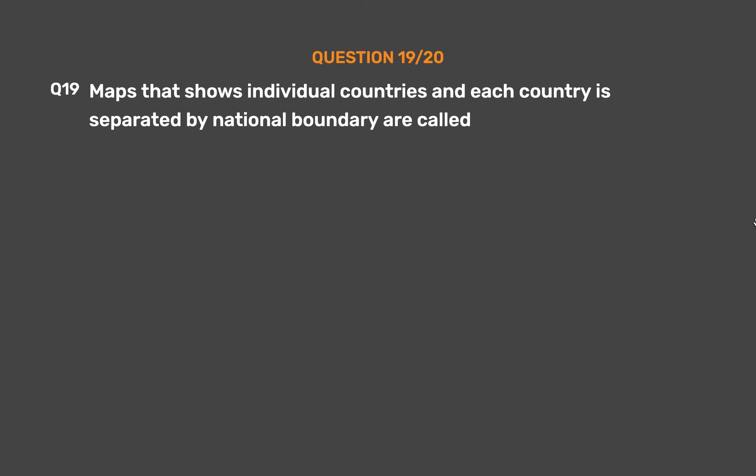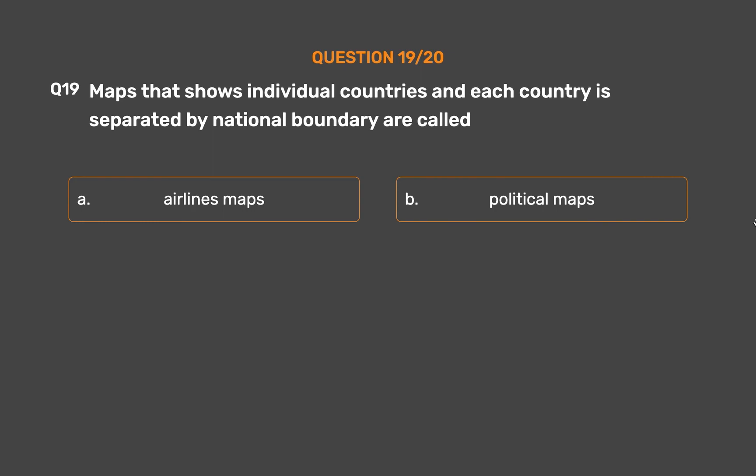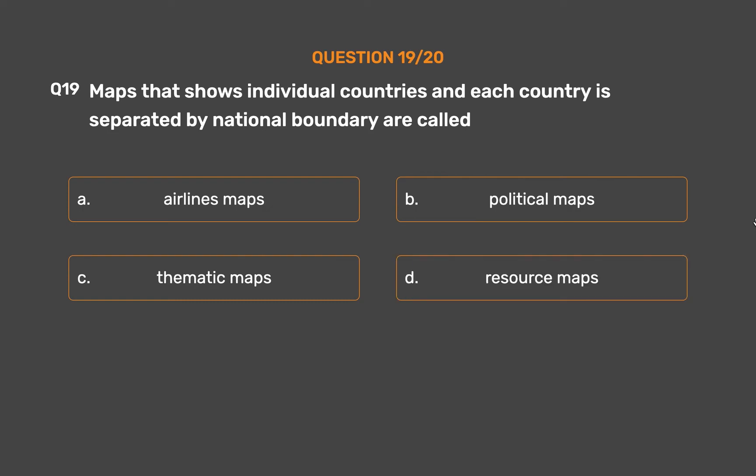Question number 19. Maps that show individual countries, where each country is separated by a national boundary, are called — Option A: Airlines maps. Option B: Political maps. Option C: Thematic maps. Option D: Resource maps.